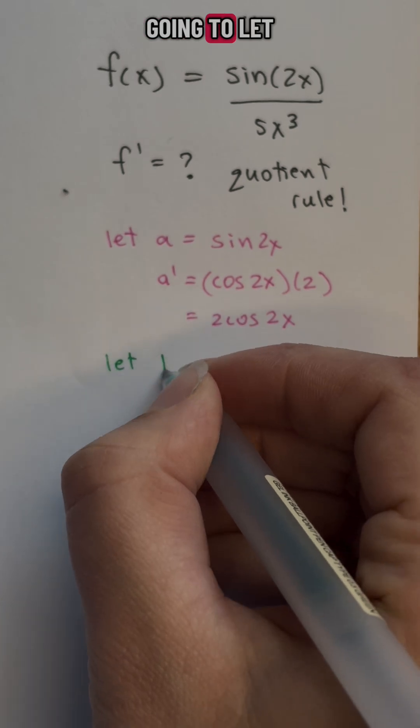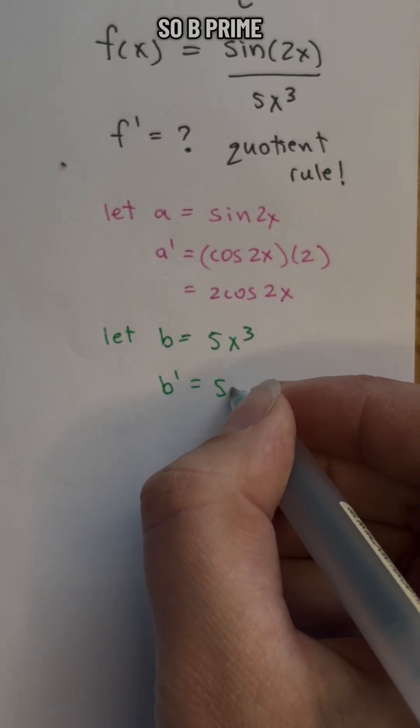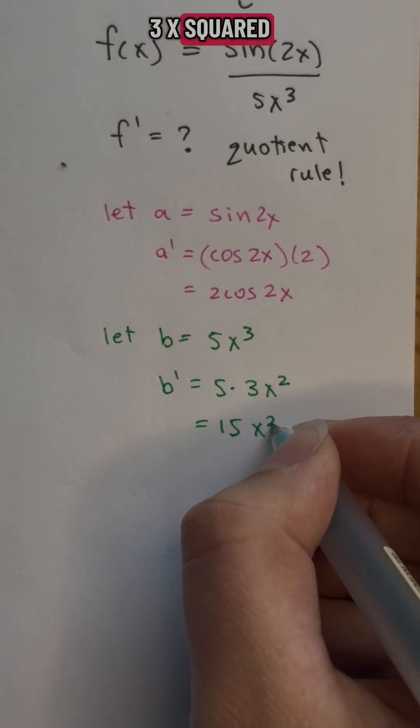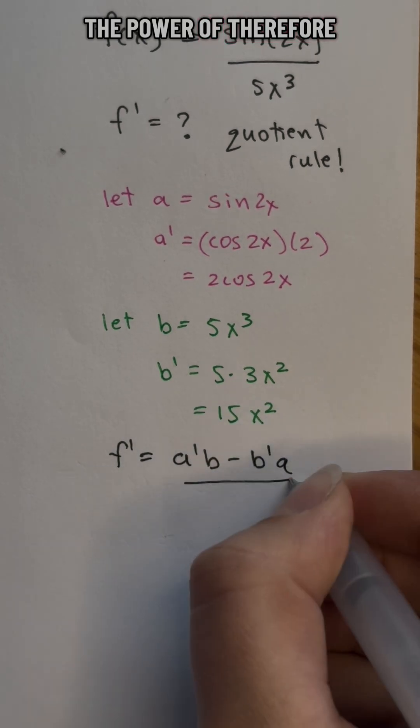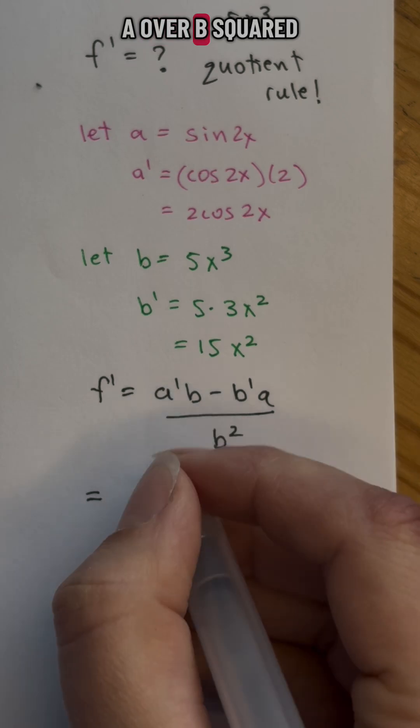Now we are going to let b equal 5x cubed, so b prime is 5 times 3x squared, which is 15x squared by the power rule. Therefore, the derivative is a prime b minus b prime a over b squared.